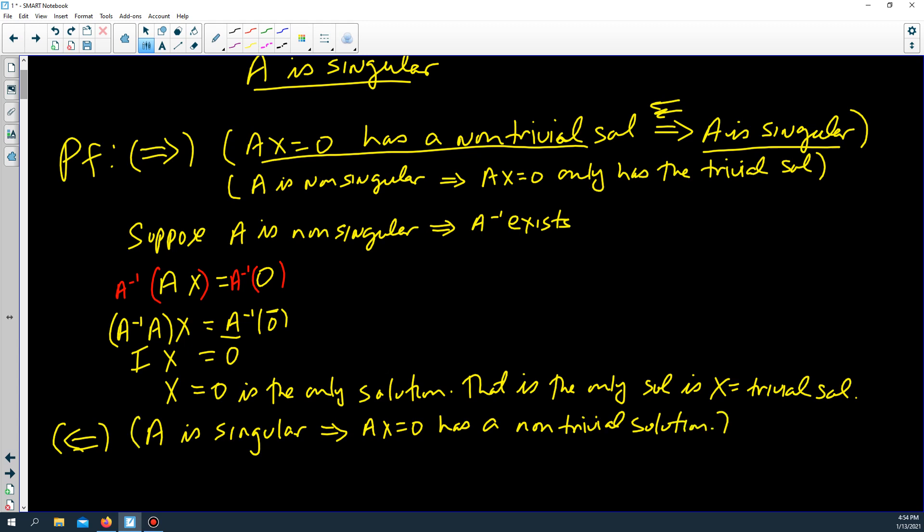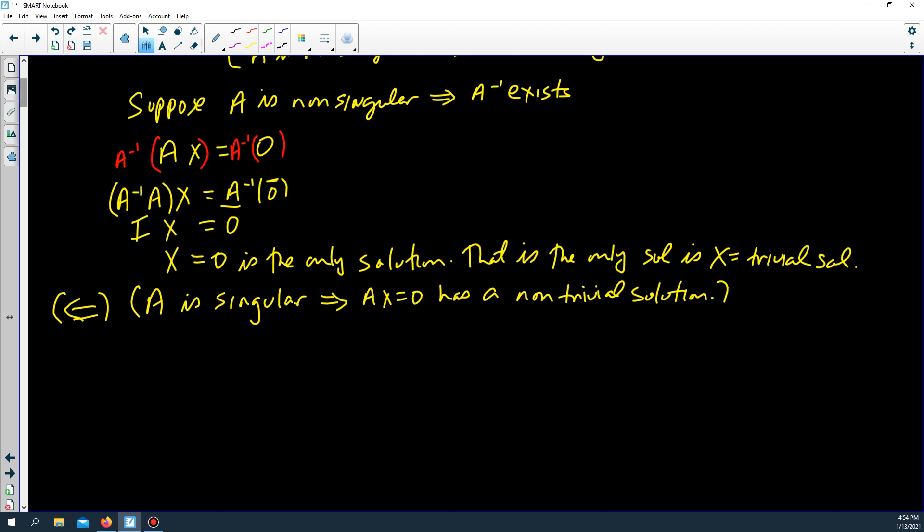This is what we want to prove. So, A is singular implies that A is row equivalent to matrix B, where B has a column of all zeros.